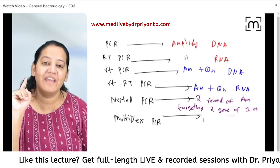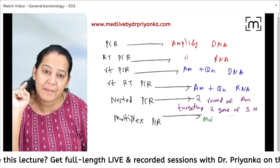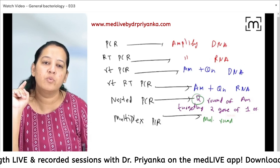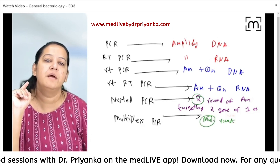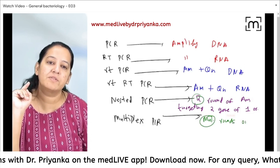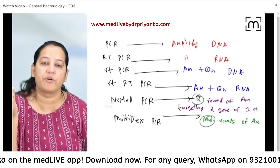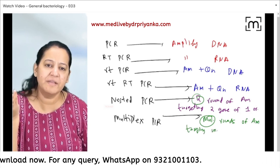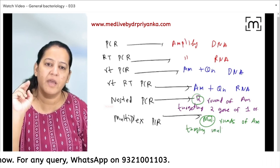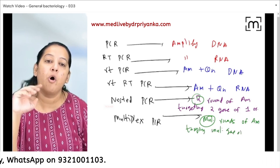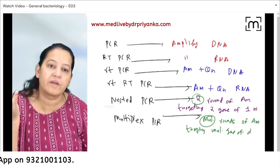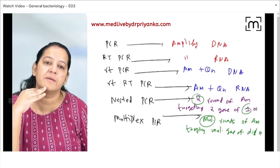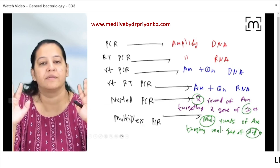In multiplex PCR, we conduct multiple rounds of amplification — not just two — targeting multiple genes of different organisms, not one organism. In nested PCR it was one organism; in multiplex PCR it is different organisms.